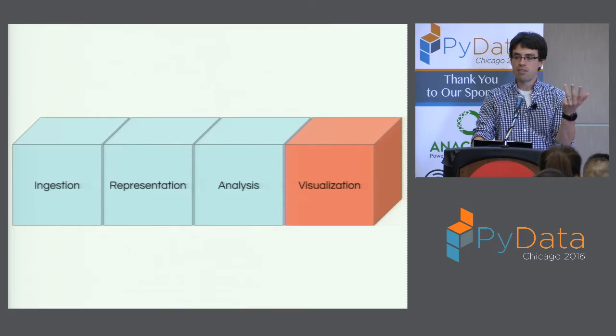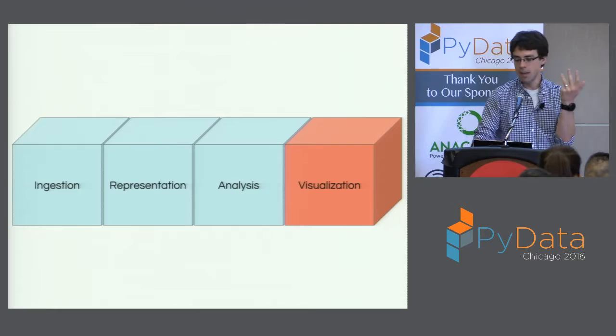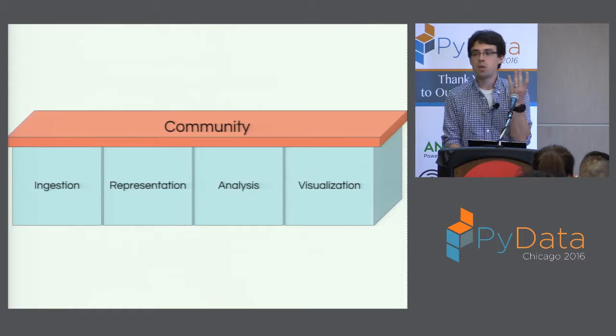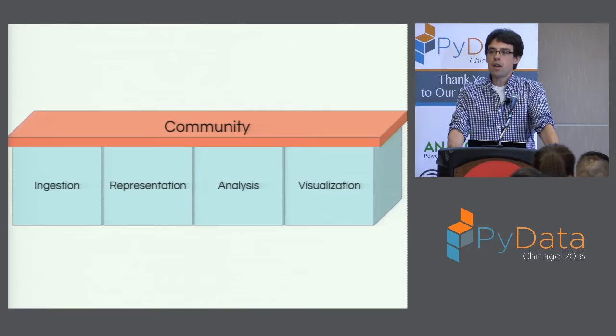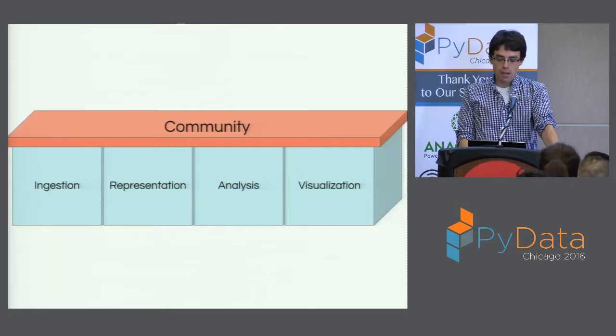What all these different phases of the way we talk about data have in common is that they require a substrate — or superstrate, I suppose — of community: the people that deal with that section of the code and people that utilize it. Without these different communities of people, each one of these components would usually be regarded as a separate project or separate piece of software.